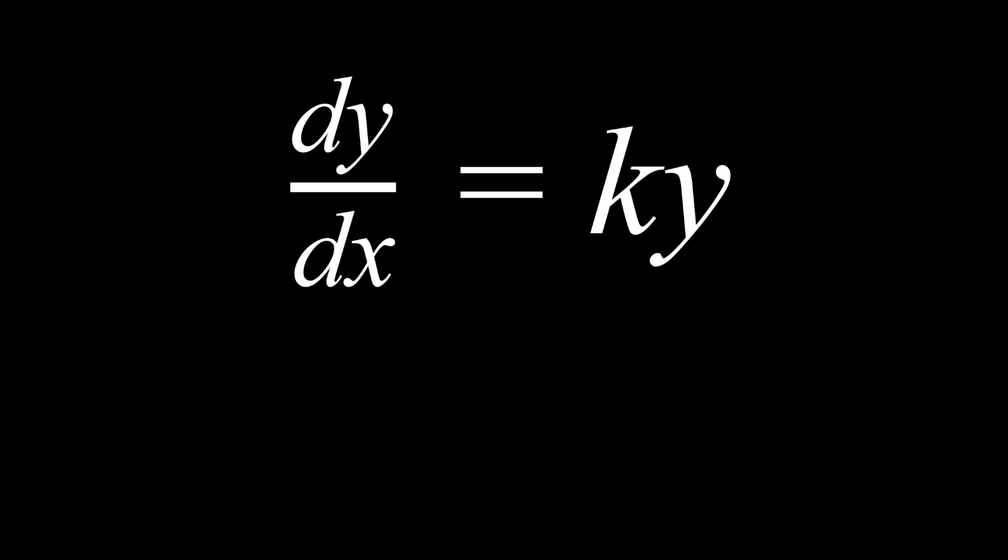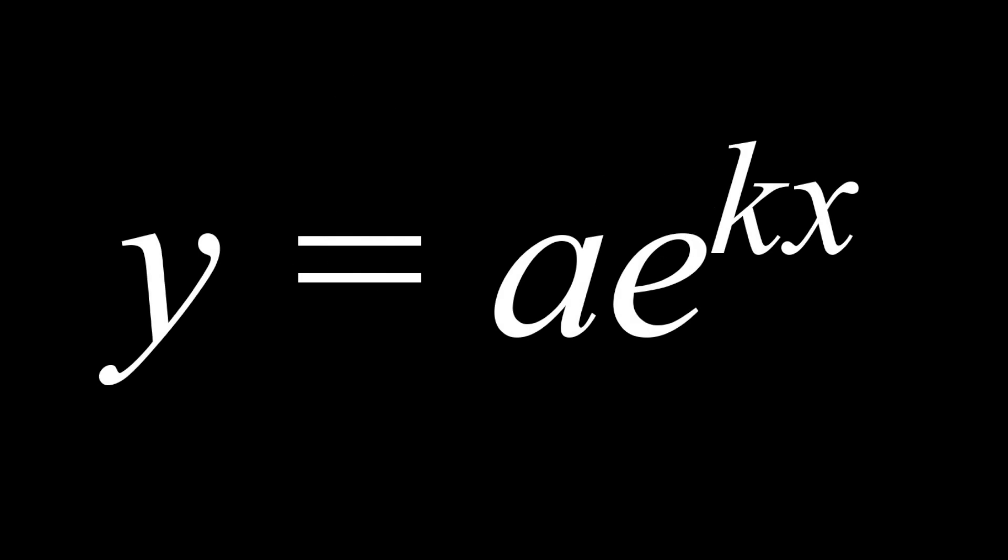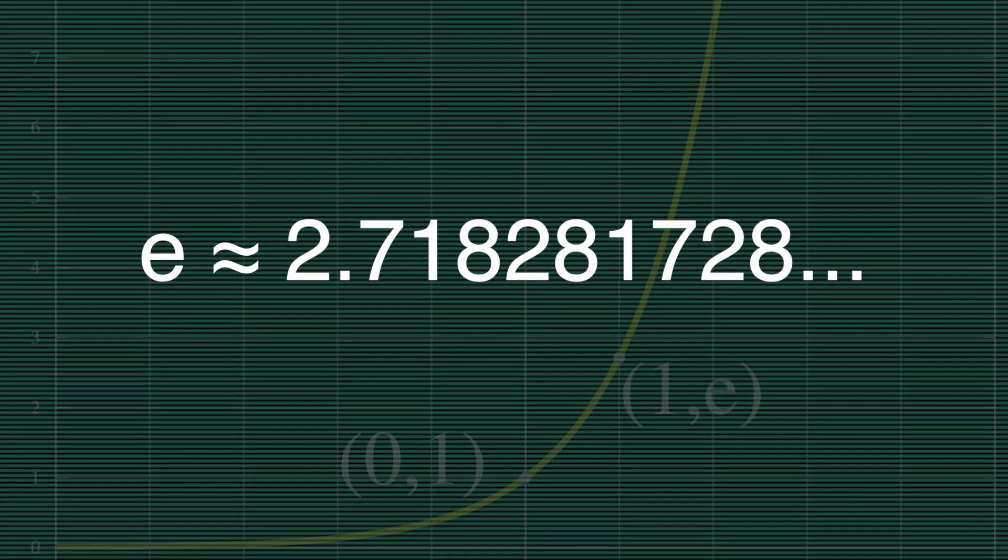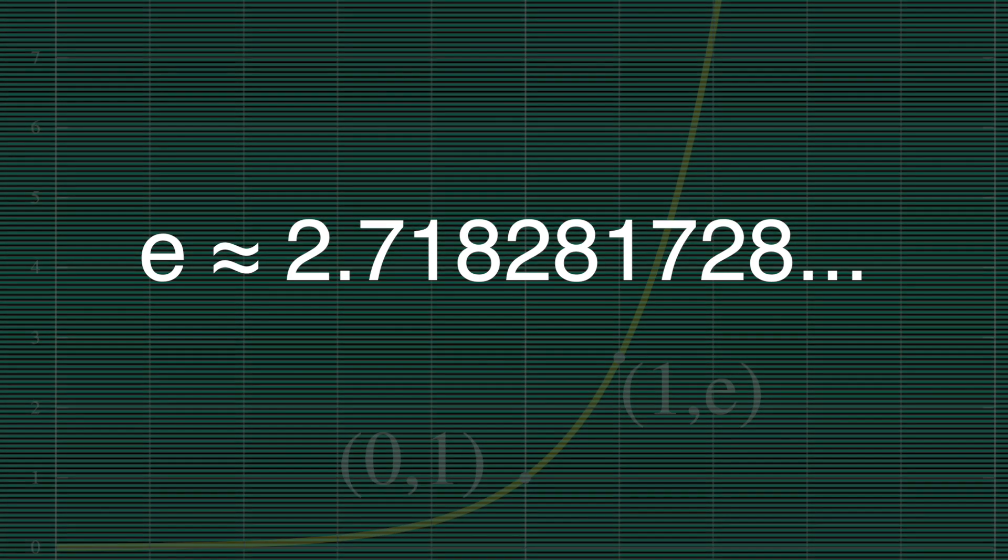Solving this equation yields the following function. This is a form of the exponential function we casually used in part one, but with a very special base, the constant e. e is an irrational number, like pi, and is approximately equal to 2.718281828.